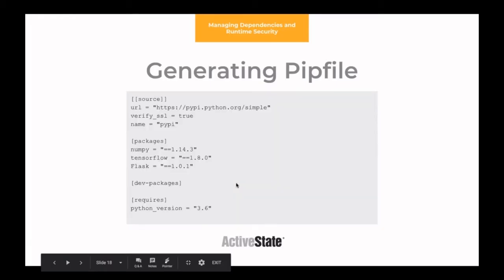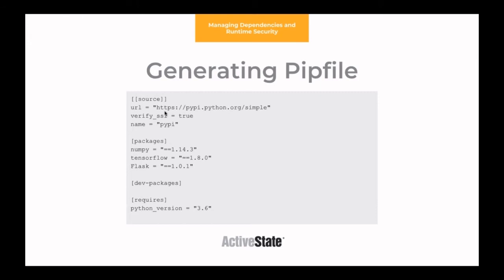One of the extra features of the pip file is that it allows you to designate the source — where you're getting the information on your packages from. In this case it's PyPI. You also have the ability to have different sets of packages for development versus production. You can also specify things like what version of Python it requires, so it gives you a little bit more control than what's in the requirements.txt.